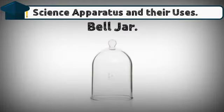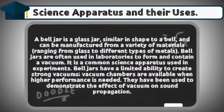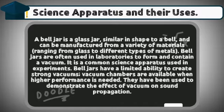Bell jar. A bell jar is a glass jar, similar in shape to a bell, and can be manufactured from a variety of materials, ranging from glass to different types of metals. Bell jars are often used in laboratories to form and contain a vacuum. It is a common science apparatus used in experiments. Bell jars have a limited ability to create strong vacuums; vacuum chambers are available when higher performance is needed. They have been used to demonstrate the effect of vacuum on sound propagation.